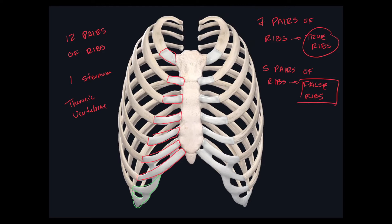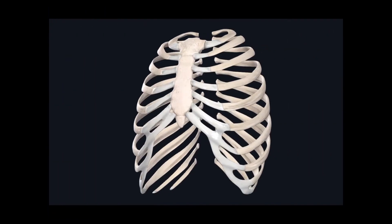Within the false ribs, there's another subunit called floating ribs. Looking at the last two pairs of ribs in this image, their costal cartilage doesn't even connect to other costal cartilages found superior to them. Because of this, they seem to be floating, and that's why we have two pairs of floating ribs.